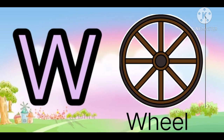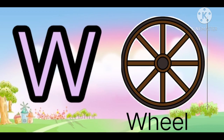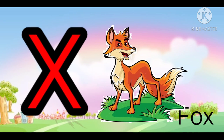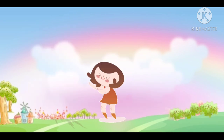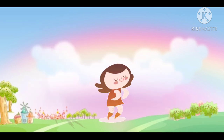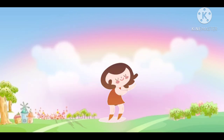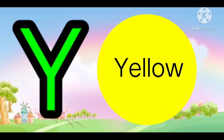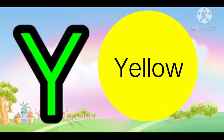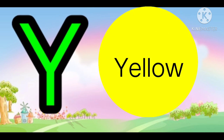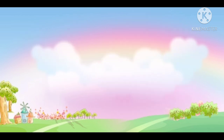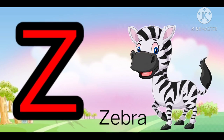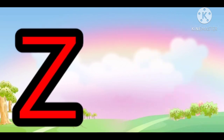W is for Wheel. W, W. Wheel. X is for Box. X, X. Box. Y is for Yellow. Y, Y. Yellow. Z is for Zebra. Z, Z. Zebra.